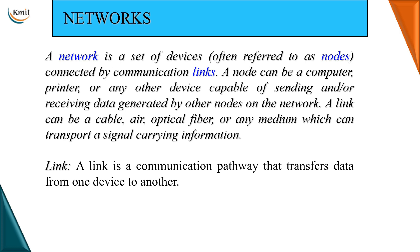How do I define a network? A network is a set of devices, often referred to as nodes, connected by communication links. A node could be a computer, a printer, or any device capable of sending and receiving information. A link is a communication pathway between these devices to transfer data from one place to another. The communication link could be a cable or air — the medium could be wired or wireless.